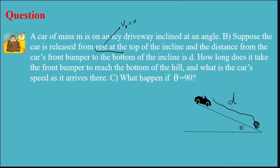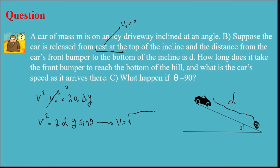Then I need to find the speed when the car arrives at the bottom of the hill. We know that V² minus V₀² equals 2A times delta y. Since the car starts from rest, V₀ equals 0. So V² equals 2 times A times D, where delta y equals D and A equals g sine theta. Therefore, my V equals the square root of 2Dg sine theta. That's my answer for the speed in part B.